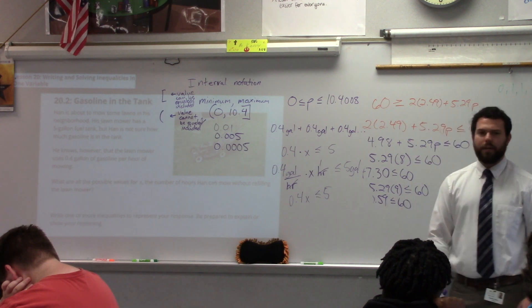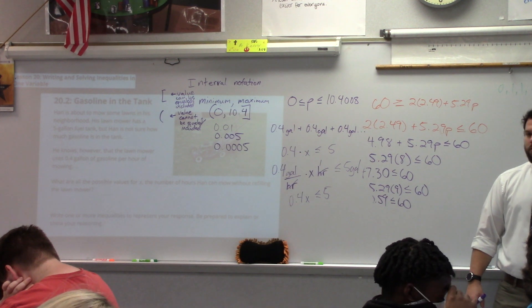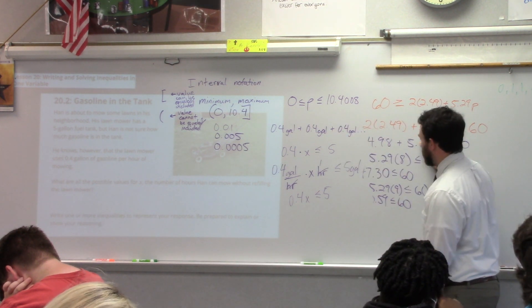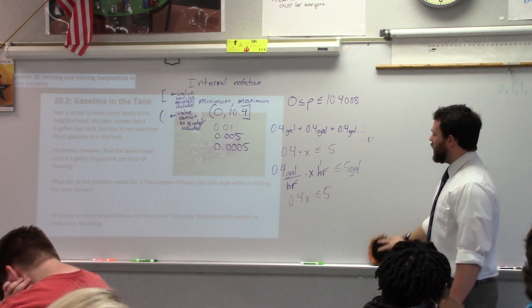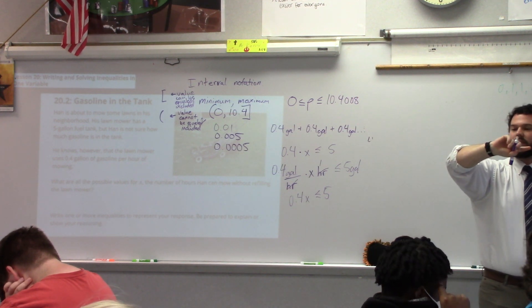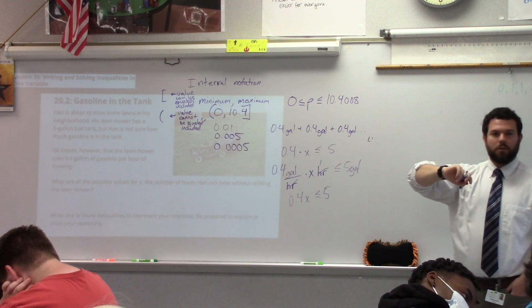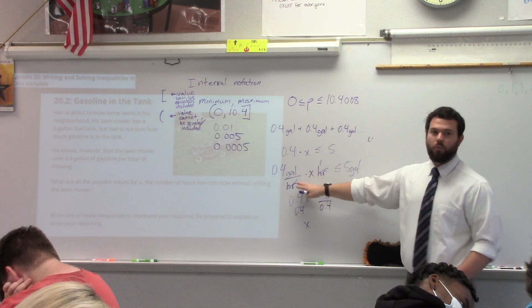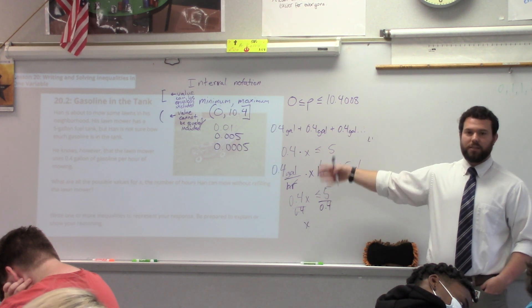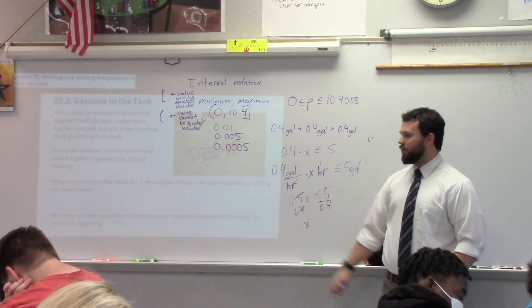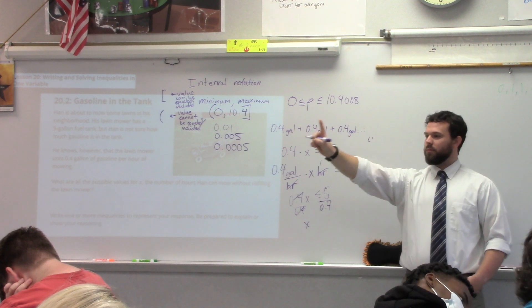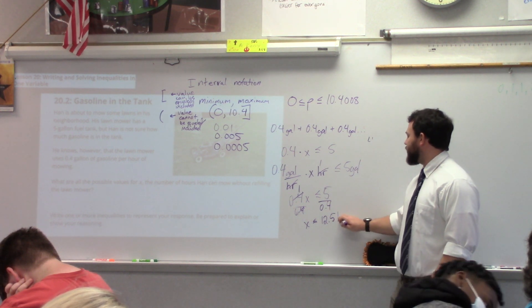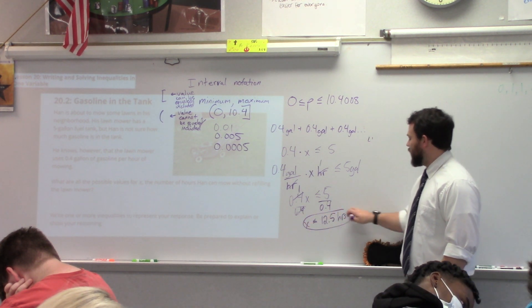Then the question becomes, write one or more inequalities. We have one inequality. Is there any other inequalities that we need to write? So what would be our solutions here? Because first off, how are we going to represent our solutions every time? We would divide to solve this. That is correct, but that's not quite what I'm asking. I asked why do we divide? Because we're being multiplied, right? What is the inverse of multiplication? Division. 0.4 divided by 0.4 is one, and 1 times X is X. And was it 12.5 hours of mowing, right? That's the solution.